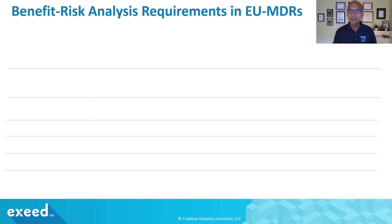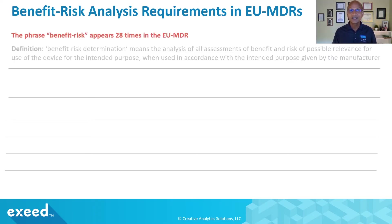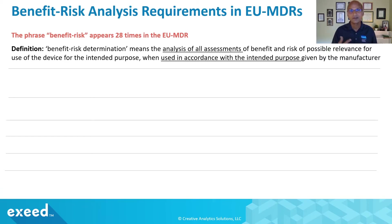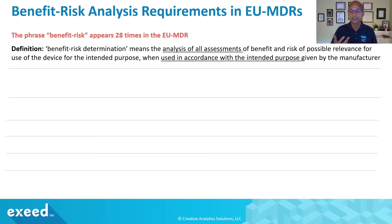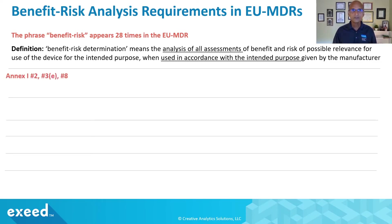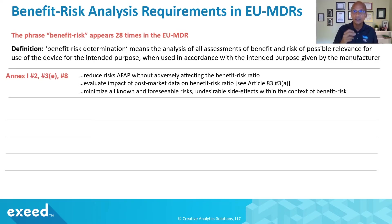Benefit-risk analysis requirements in EU MDR are extensive — as I mentioned, it appears 28 times. Look at how they have defined the term in the regulation: 'Benefit-risk determination means the analysis of all assessments of benefit and risk of possible relevance for the use of the device for the intended purpose.' So the key word is intended purpose or intended use, which you would have defined early on and finalized during design and development. All your IFUs should be based on intended use, so benefit-risk is in the context of intended use.